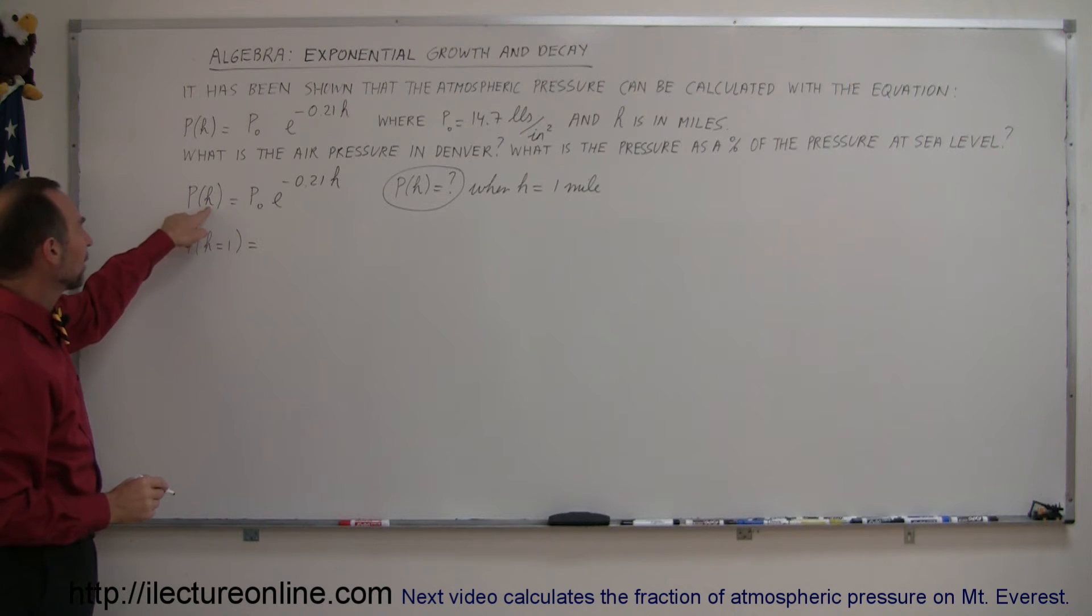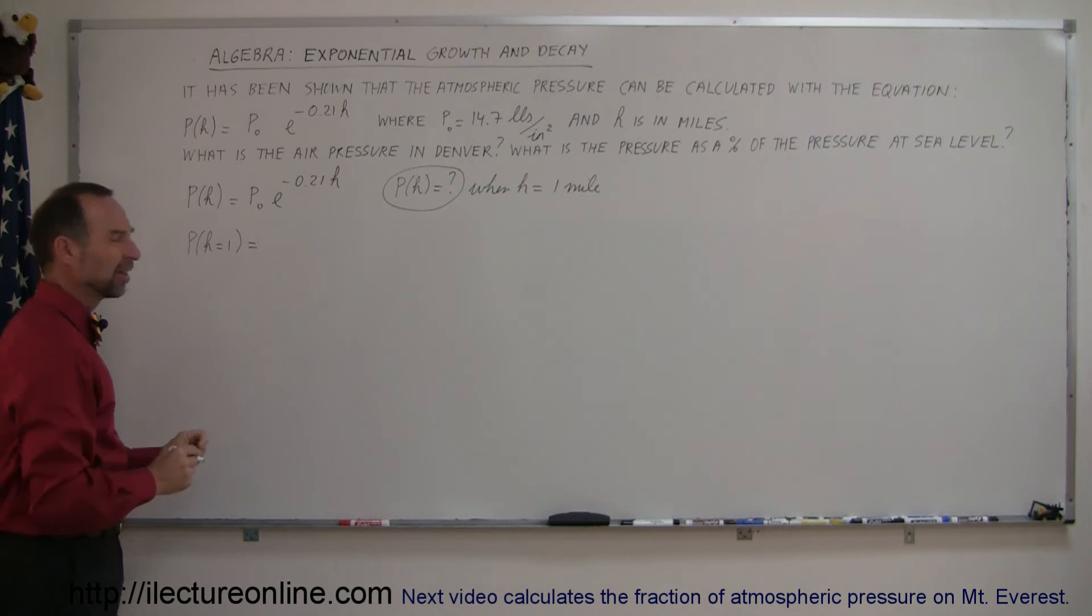Notice how I always do this. I always write what the variable that it depends on is equal to, so that makes a lot more sense. We're looking for the pressure when the height is equal to one mile. Sometimes we're lazy and don't do that, and it makes it more difficult to understand what we're actually trying to do.